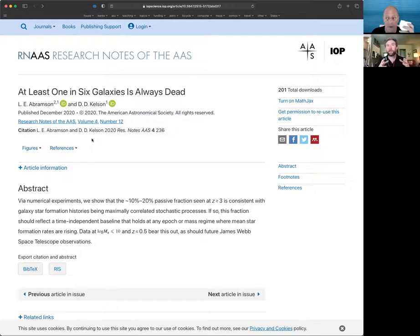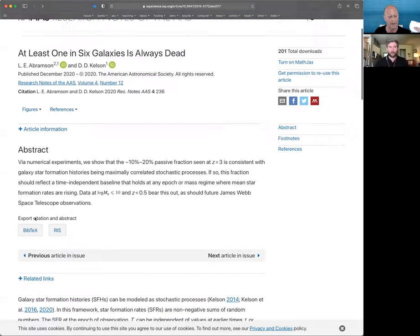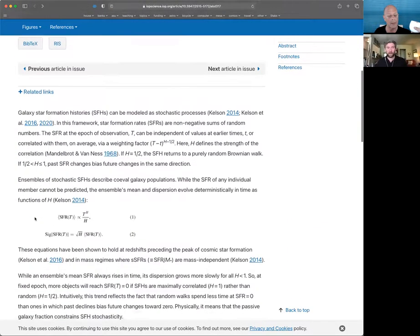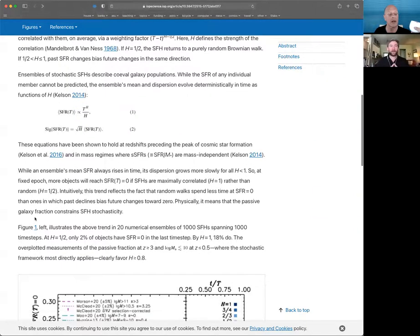This is the suite of star formation histories we've been playing with for the past five years. This paper explores the implications of that math for something very readily observable that we all know and love: the fraction of passive galaxies, the red and dead things. It's a simple calculation showing our expectation and allows people to go forward and try to break it and tell us we're wrong later.